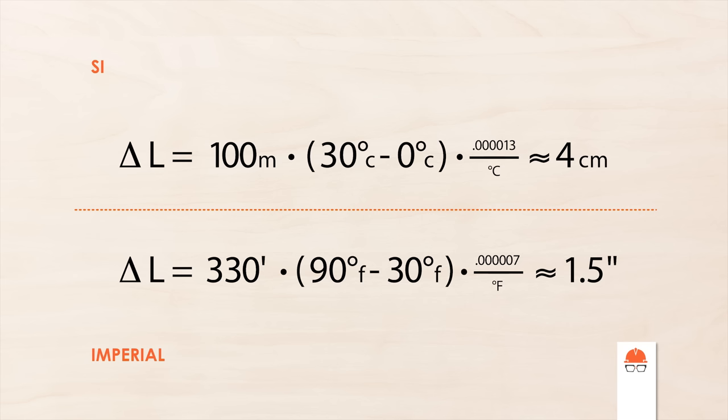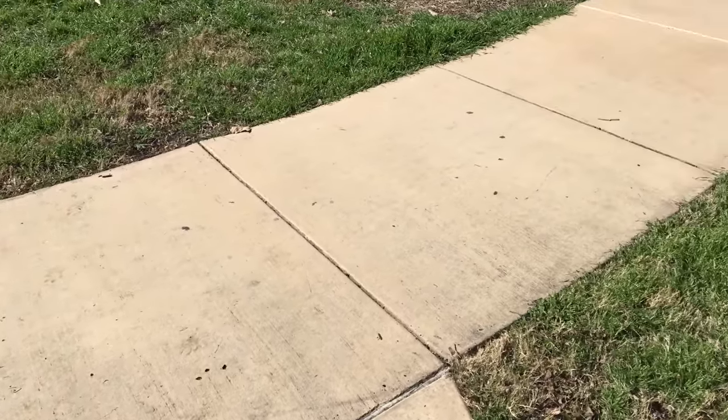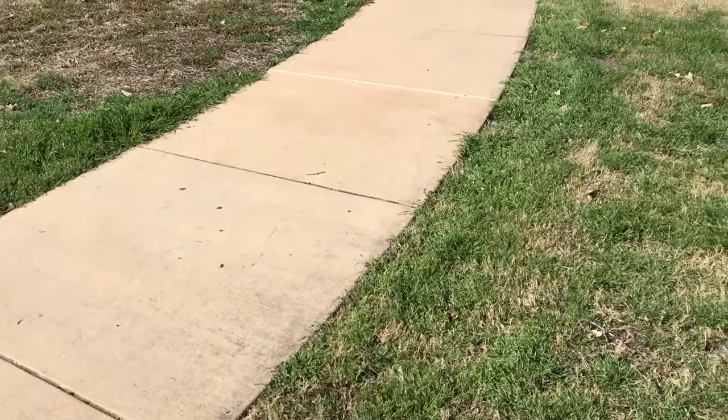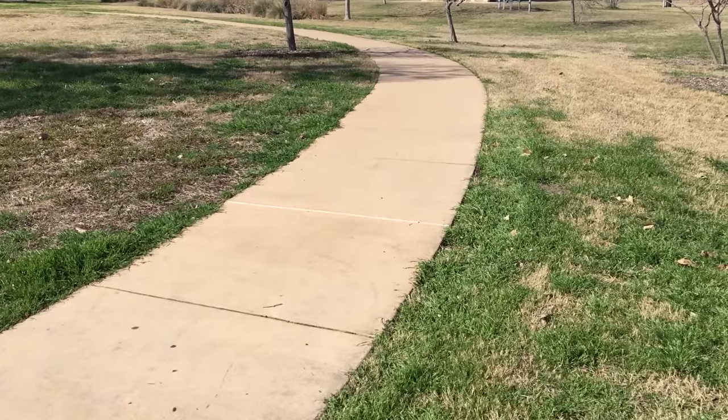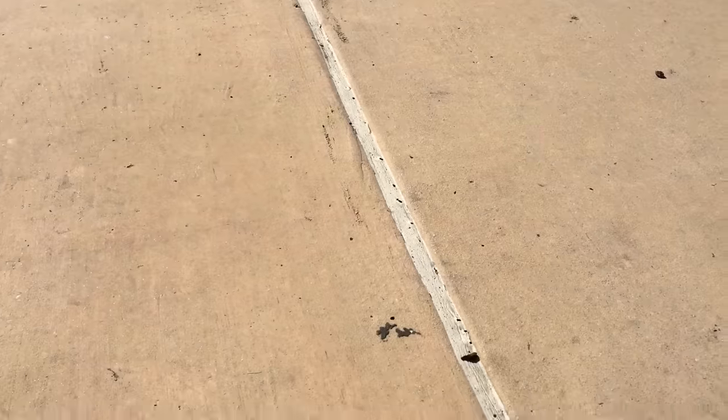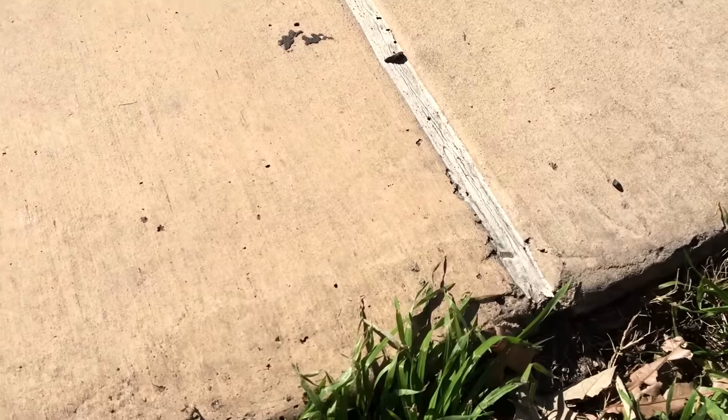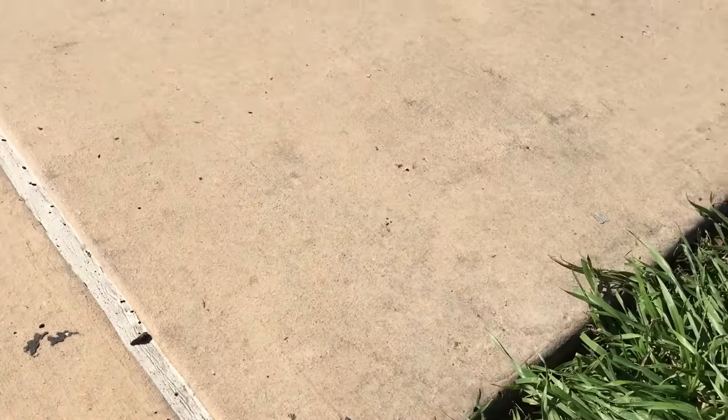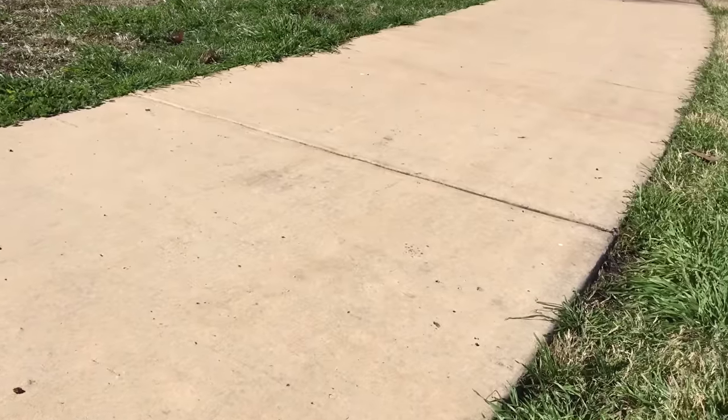Obviously, you can't leave a gap in the sidewalk that big at the end of every block, so instead, we leave small gaps, spaced every so often, to accommodate that movement. Most of the joints you see along a sidewalk are just to control cracking, but if you pay attention, every so often, you'll see an actual break in the concrete, filled with some kind of flexible material. These are expansion joints that give the walkway the freedom to move from fluctuations in temperature.